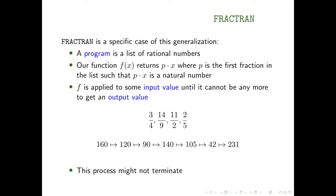105 can't be multiplied by any fraction until the very last one, 2/5, giving 42. Then 42 can't use three-fourths or 14/9, but can use 11/2, giving 231. And 231 can't be multiplied by any fraction in the list, so we stop. If we input 160 into our program, it outputs 231.